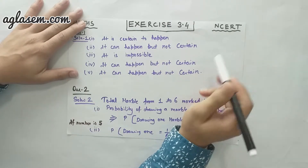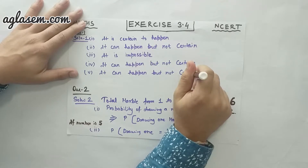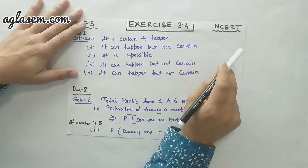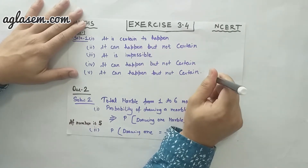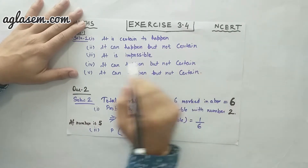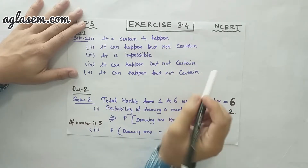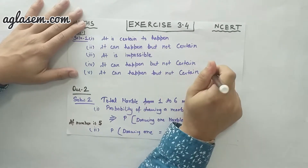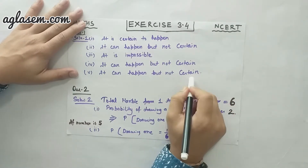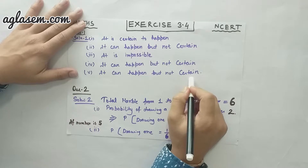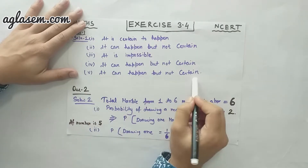Moving to the fourth part: the next traffic light will be green. It can happen but not certain. The last part of this question is: tomorrow will be a cloudy day. It can happen but not certain.